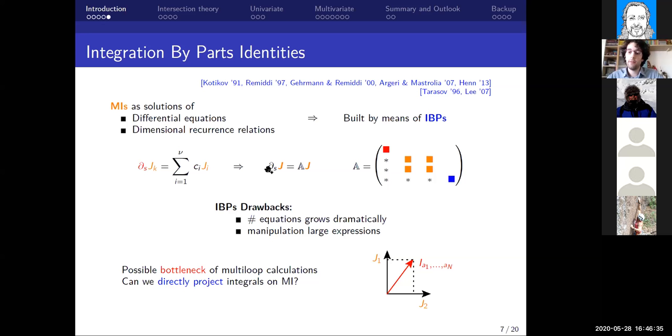As you can see, IBPs play a central role in multi-loop calculations nowadays, although they come with some drawbacks. For instance, the number of equations grows dramatically as we go into higher loop examples, and we start to have a large manipulation of great intermediate expressions, when actually the coefficients of the final reduction can be quite simple. This makes IBPs a possible bottleneck for multi-loop calculations. Can't we directly project our integral in terms of master integrals as we can do for a vector in terms of their basis elements to avoid the solution of the huge system?